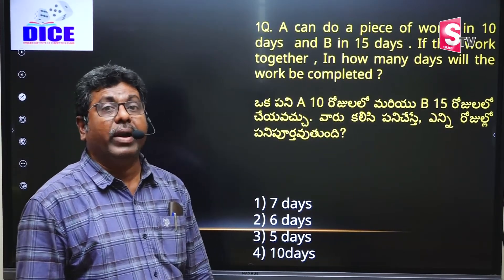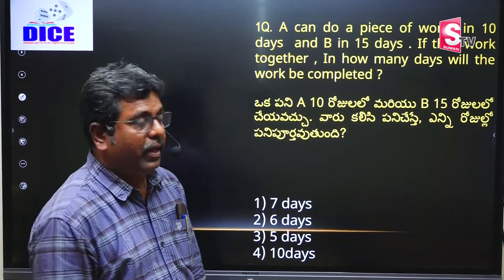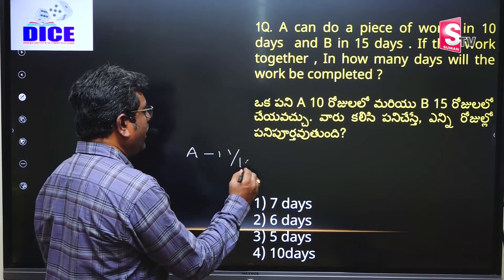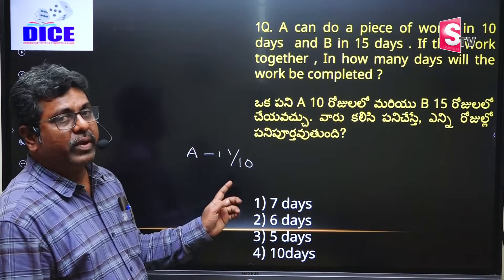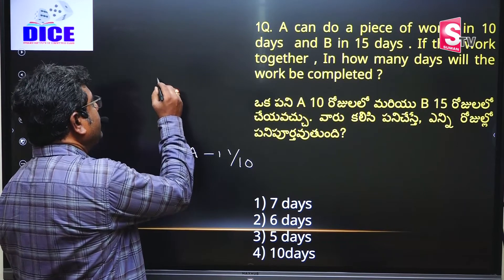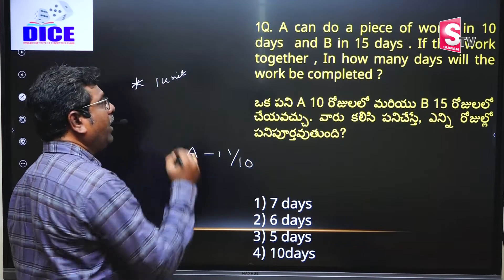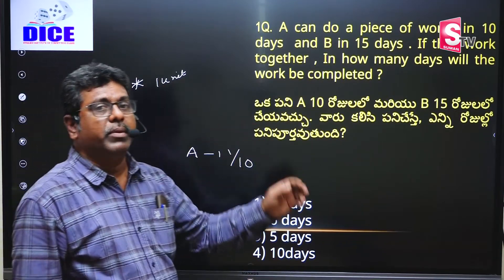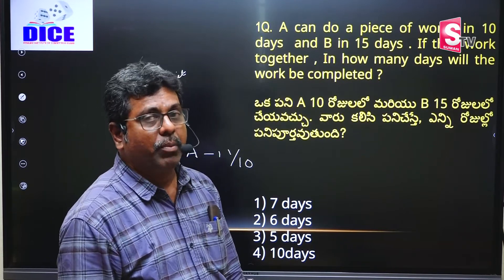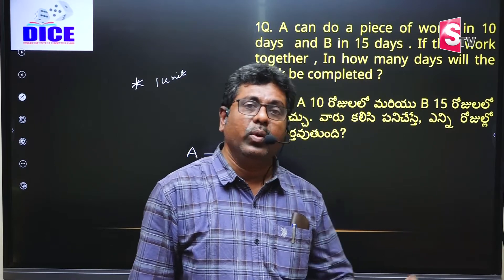First of all, you have to understand one day's work. Suppose A can do a piece of work in 10 days — A's one day's work means 1/10. In Time and Work, the total work is always equal to one unit — that is the important point. Whenever you are doing problems in Time and Work, first find out the one day's work. If you know that model, you can do the problem.